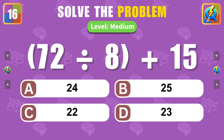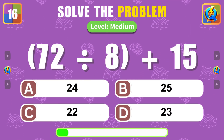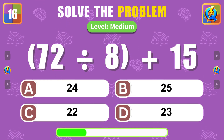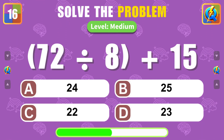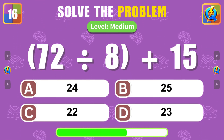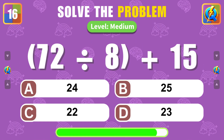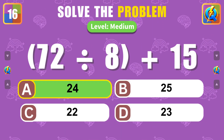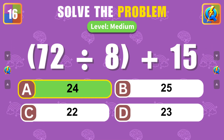What is the result of 72 divided by 8 plus 15? The answer is 24.